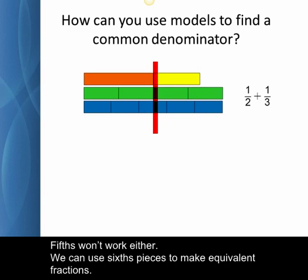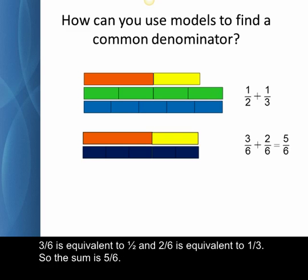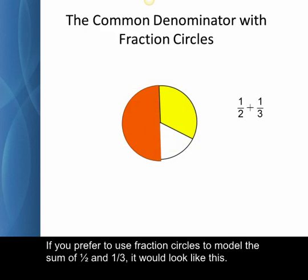Fifths won't work either. We can use sixths pieces to make equivalent fractions. Three-sixths is equivalent to one-half, and two-sixths is equivalent to one-third. So the sum is five-sixths.